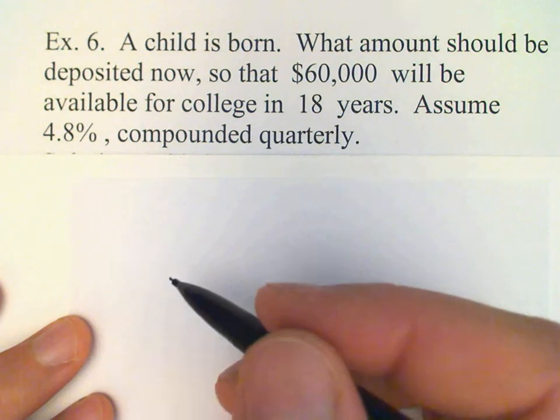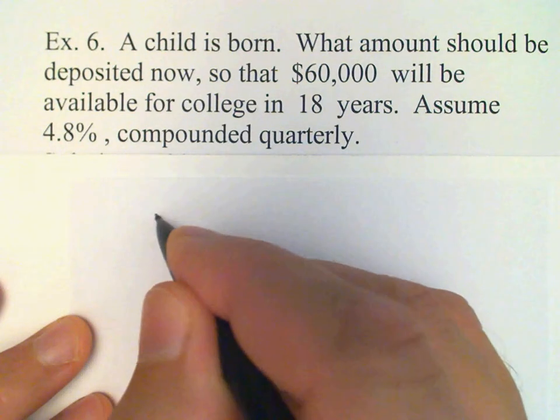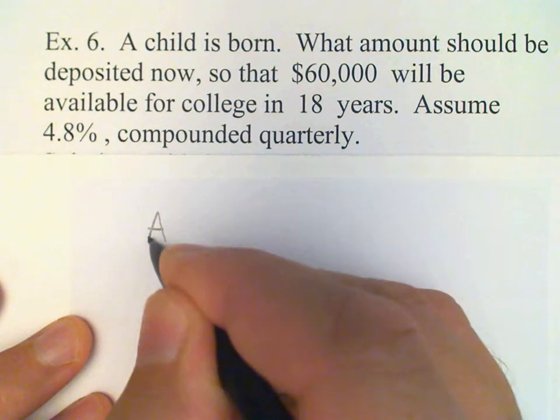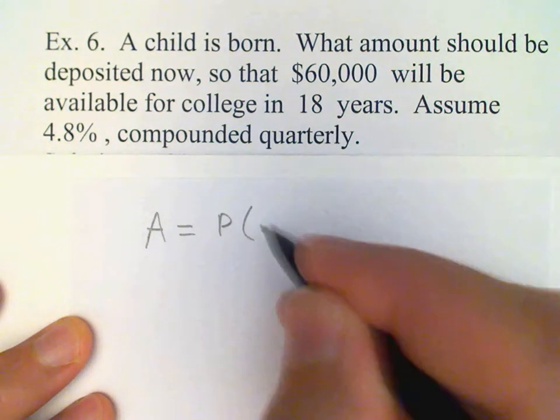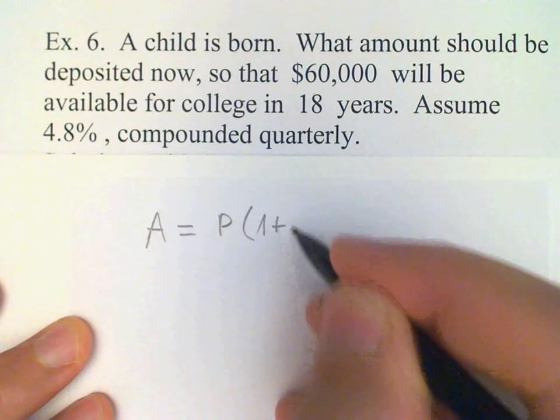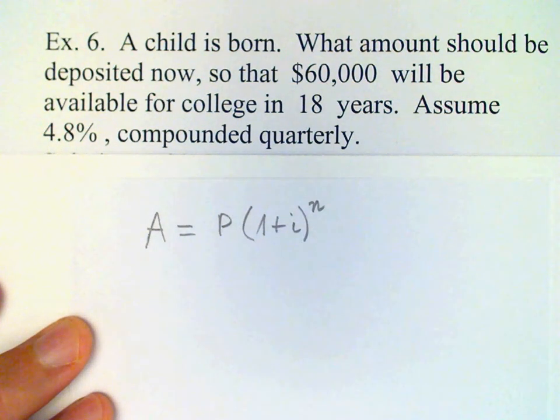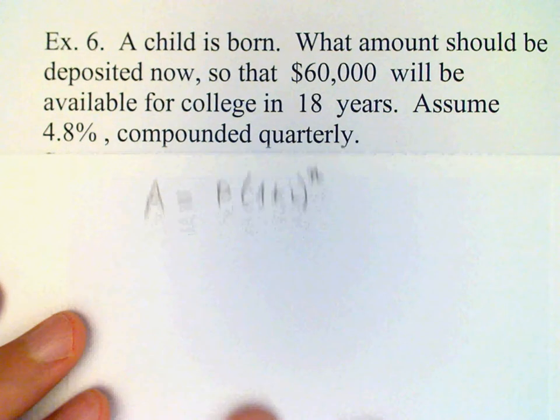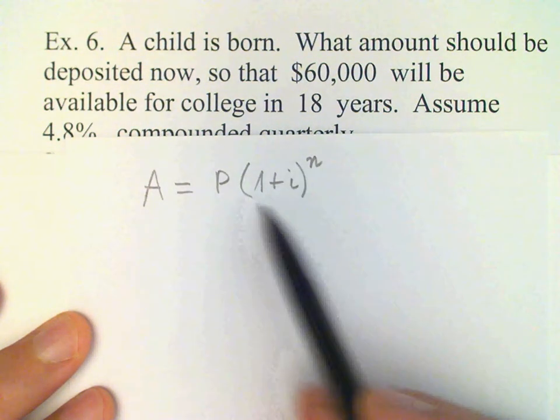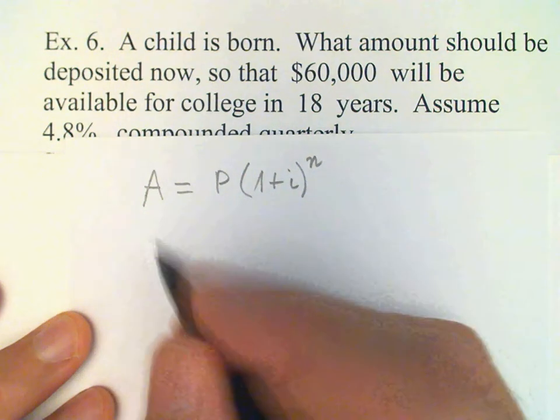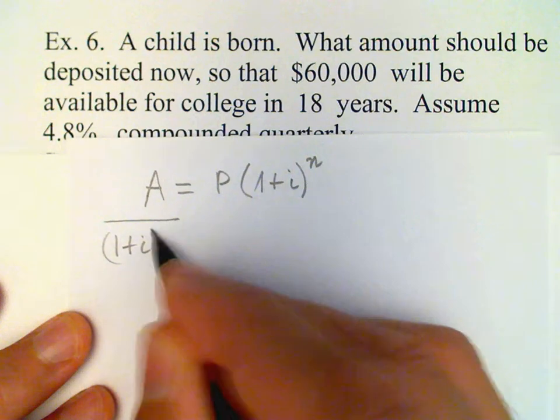The formula is the same, it's just rearranged a little bit. Our compound amount is P times (1 + i) raised to the n power. It's easy enough to solve this for the present value by dividing by this compound interest factor, (1 + i) raised to the n.